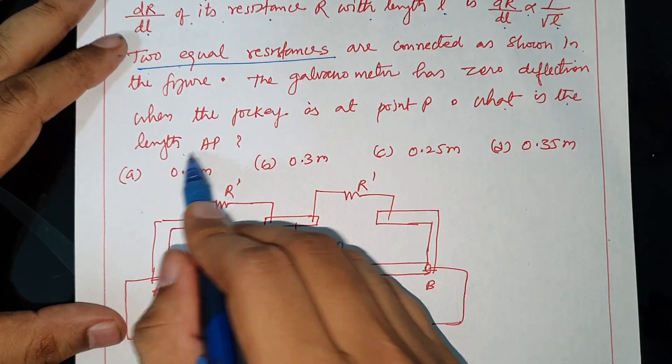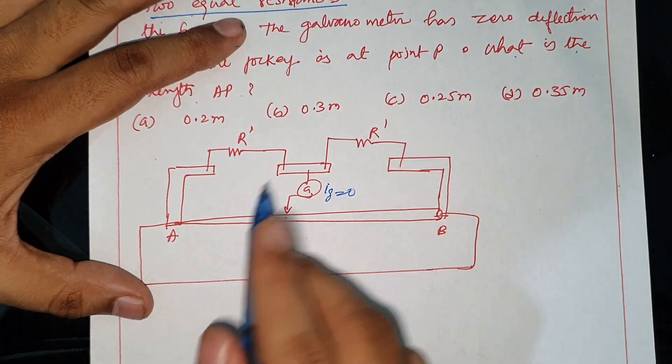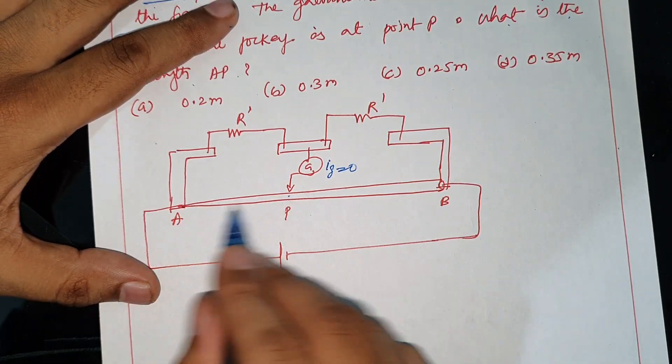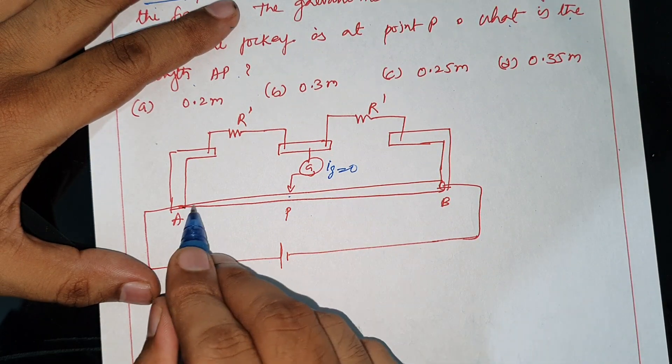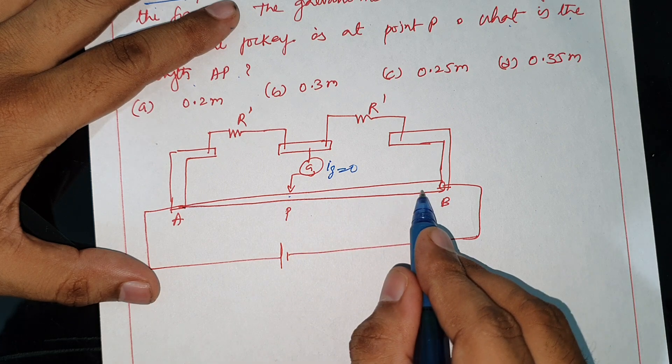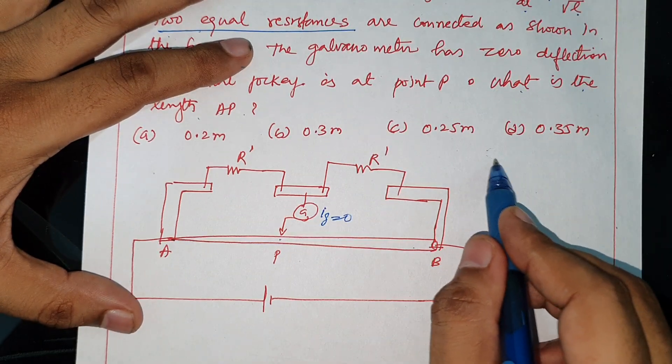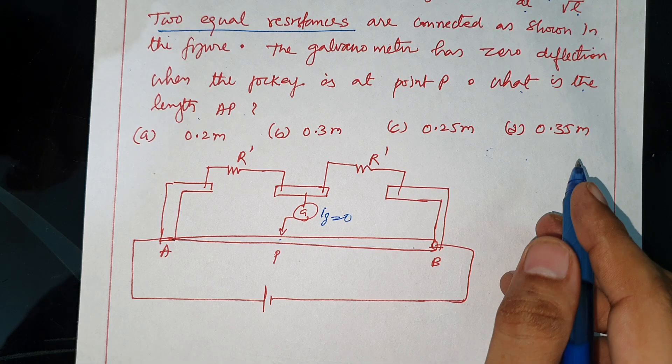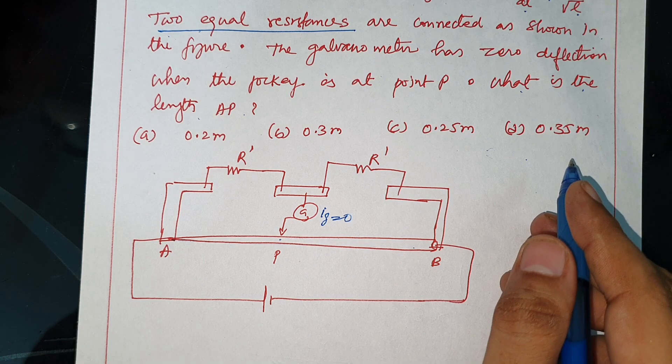What is the length of AP? This is the wire with non-uniform area of cross-section that is increasing. Now you can't decide the resistance per unit length. You can't say that 1 cm length of resistance is lambda zero. You can't use the uniform resistance formula here.